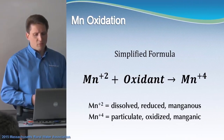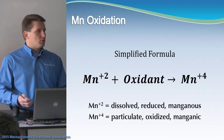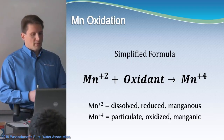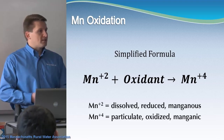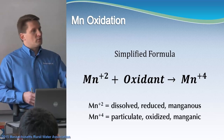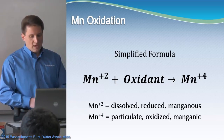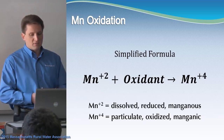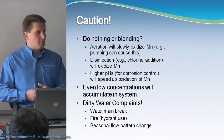Here's a simplified formula for manganese removal. On the left you have Mn²⁺ — dissolved, reduced manganese. You mix that with an oxidant such as chlorine or air, and that transfers it — removes a couple of electrons — bringing it into the particulate or oxidized Mn⁴⁺ state so that it's actually removable by a filter.